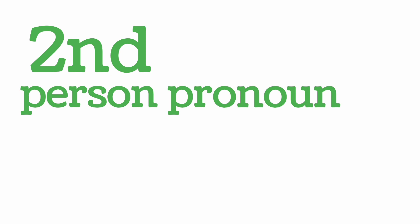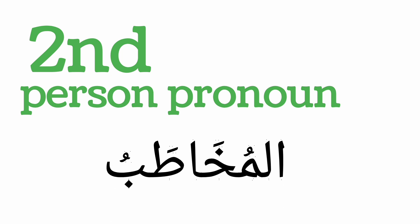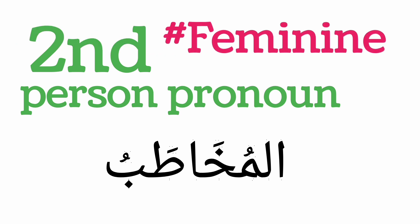So this second person pronoun — initially I told you that they are divided into six: three are for masculine and three are for feminine. We are now looking into the feminine aspect of the mukhatab. Mukhatab means the one that is being addressed or spoken to.